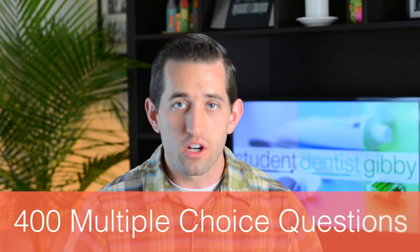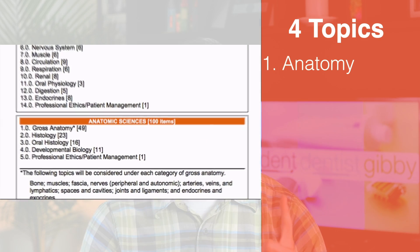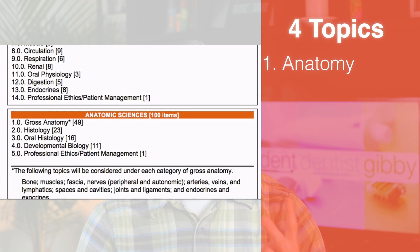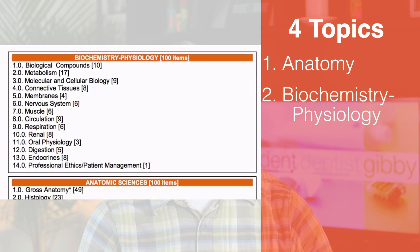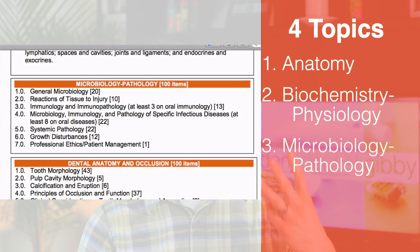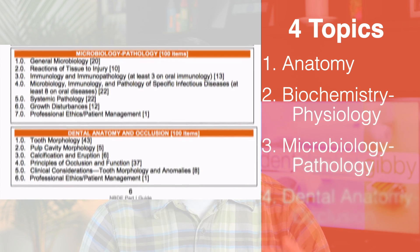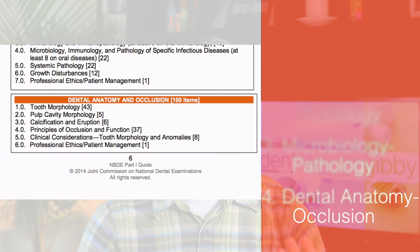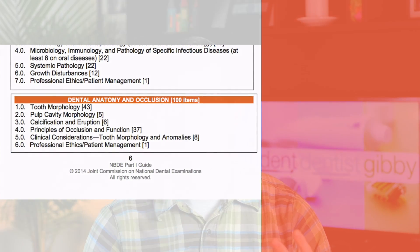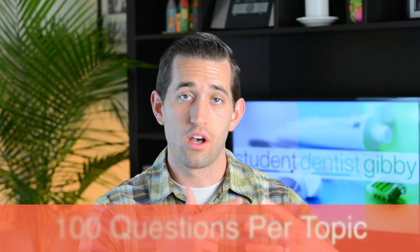The exam is 400 multiple choice questions. There are four main topics tested on part one: first is Anatomy; second is Biochemistry and Physiology; third is Microbiology and Pathology; and fourth is Dental Anatomy and Occlusion. There are a hundred questions for each one of those topics.